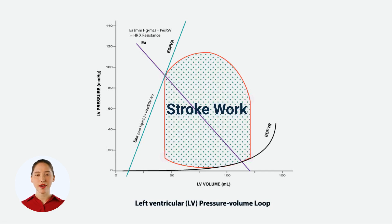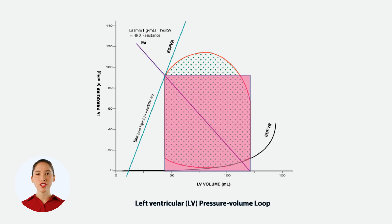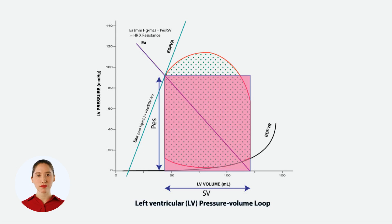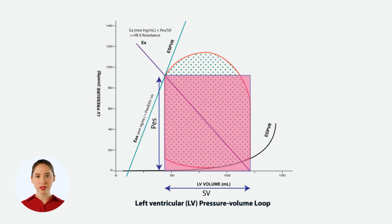I'll shade this area in a green pattern to highlight it as our stroke work. Now, we can simplify the PV loops into PV boxes. Let's draw a red box to compare. The vertical distance represents the end-systolic pressure, and the horizontal distance represents the stroke volume. The PV box and loop are quite similar, but not identical. The box has extra areas, like these red corners, and misses some green areas from the loop.